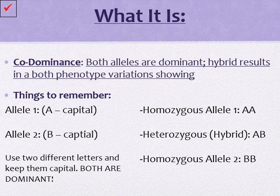Just like we did with incomplete dominance, use two different types of letters. Keep both capital to keep things easy, but since both are dominant, both have to be uppercase, so you can't use the same letter. In this case, allele 1 is represented by capital A, and allele 2 is represented by letter B. So let's say AA is black and BB is white — in the heterozygous condition, you'd see black with white spots, or white with black spots. Both phenotypes would be showing.